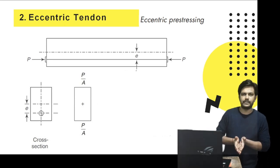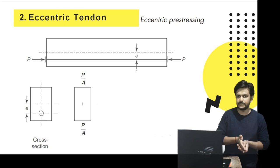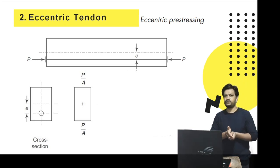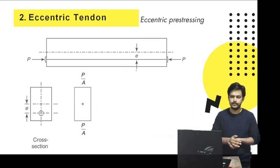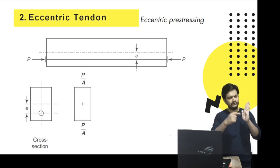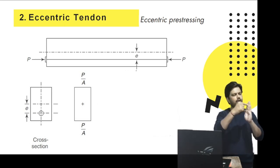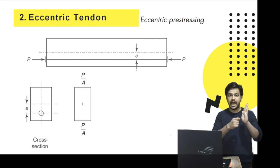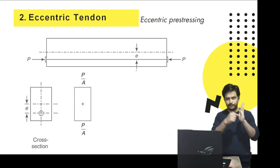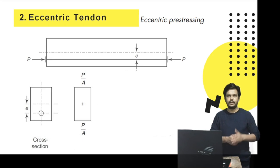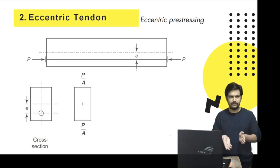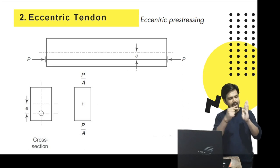In the first case, when tendons were concentric, only compressive stresses were induced. Now with the tendon kept eccentric, compressive stress P by A will still exist — because the force P acts over the cross-sectional area, inducing direct stress equal to P by A. But will it make a difference if the force is acting at the CG versus away from the CG?